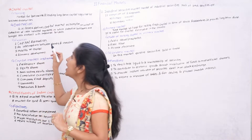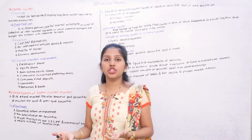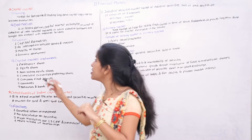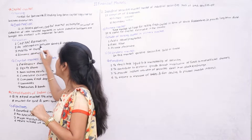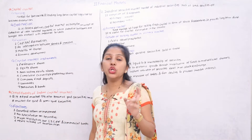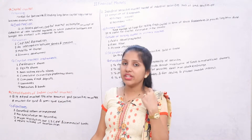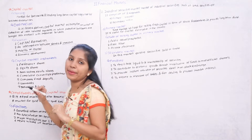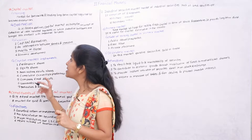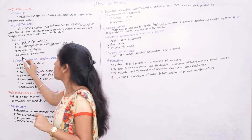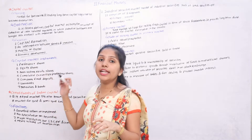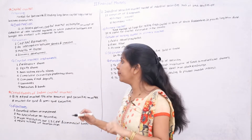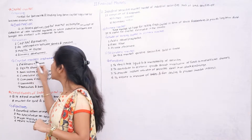So the functions of capital market: first is capital formation — the main function is to form capital. Second is acting as an intermediary between savers and investors — those who save money and those who invest it. Third is mobility of capital — facilitating the movement of capital. Fourth is contributing to economic development. These are the main functions of the capital market.